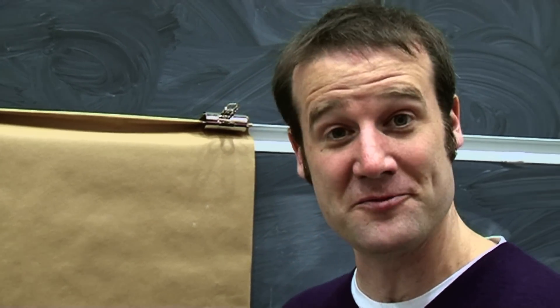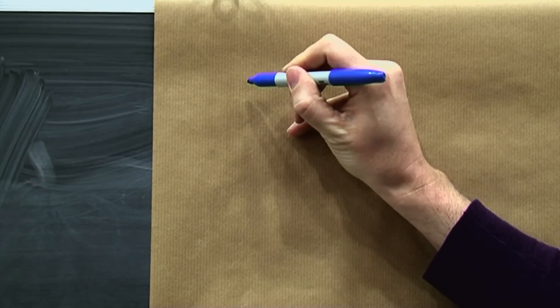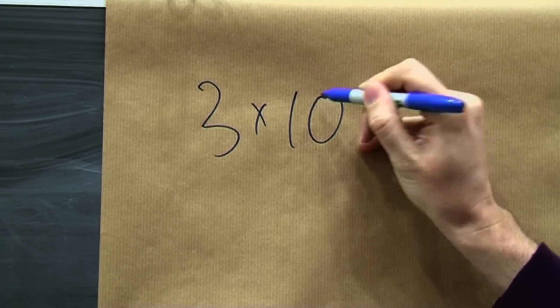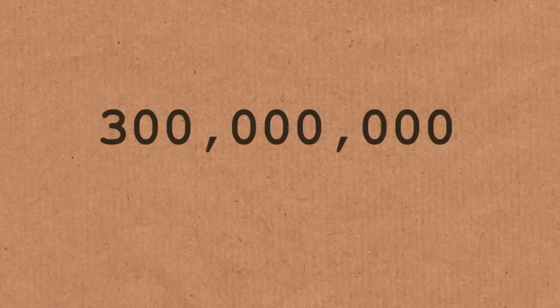Actually quite a good joke because order of magnitude is how big a number is. The speed of light is three times ten to the eight metres per second. And that's the order of magnitude. It's three with eight zeros after it.